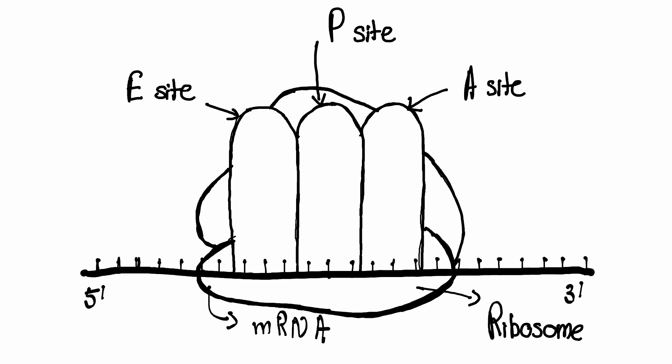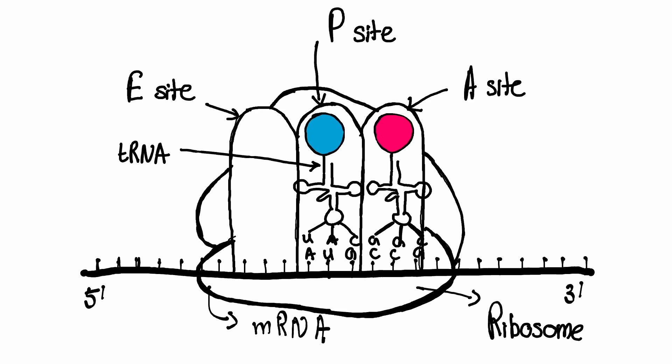The mRNA to be translated would attach itself to the ribosome. The attached mRNA would get read and tRNAs would bring appropriate amino acids to the ribosome to the appropriate site.